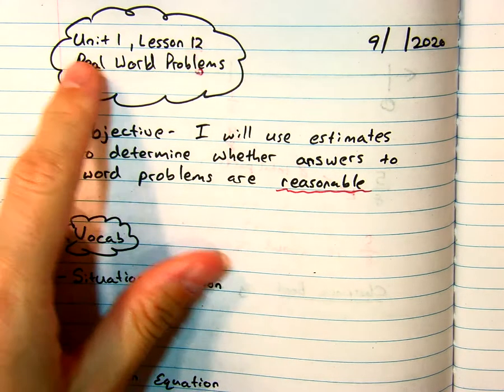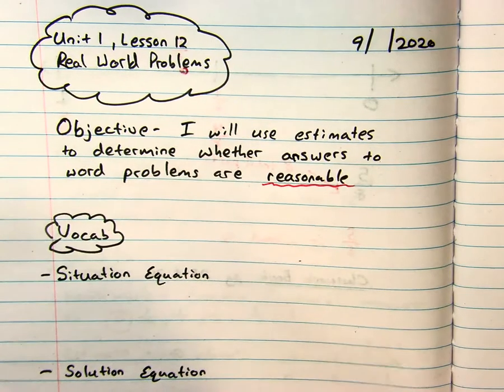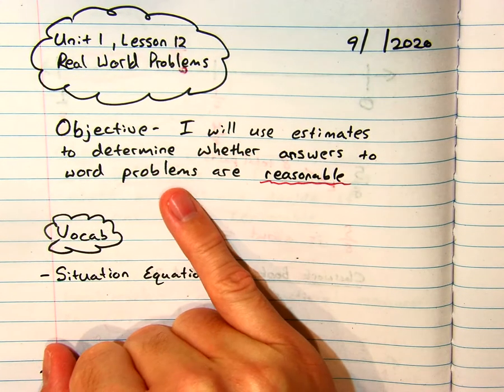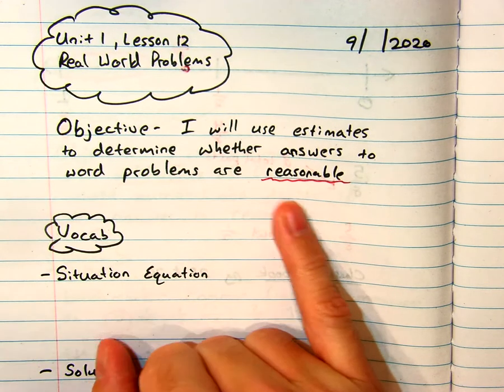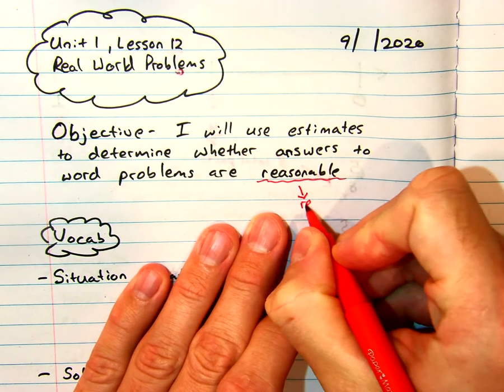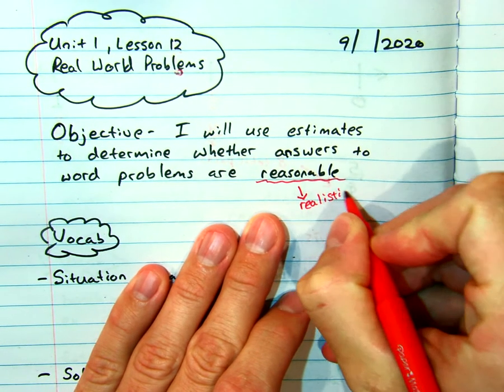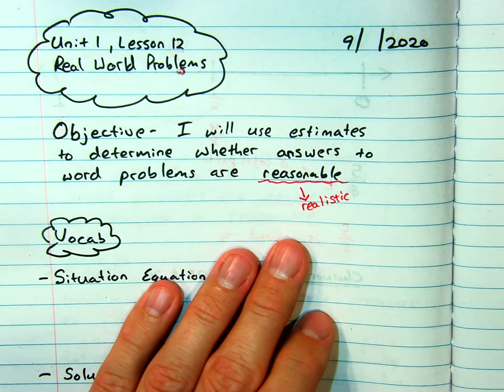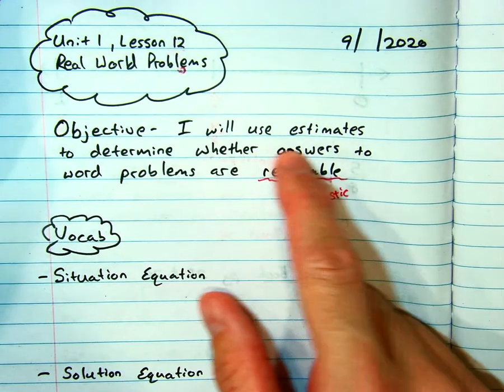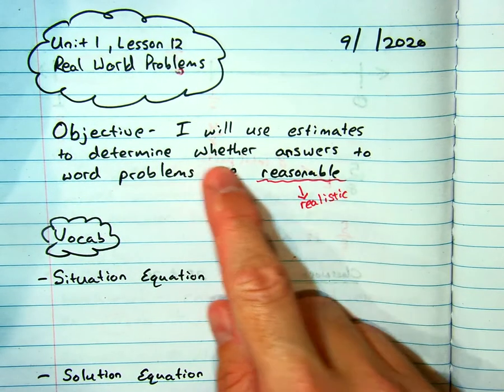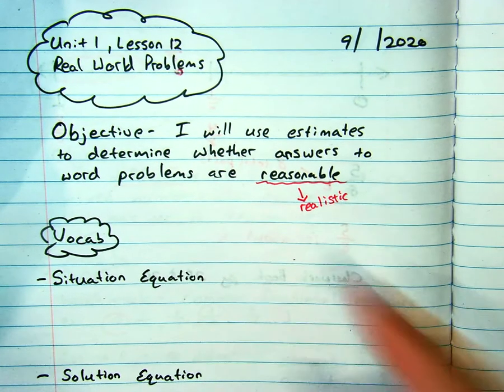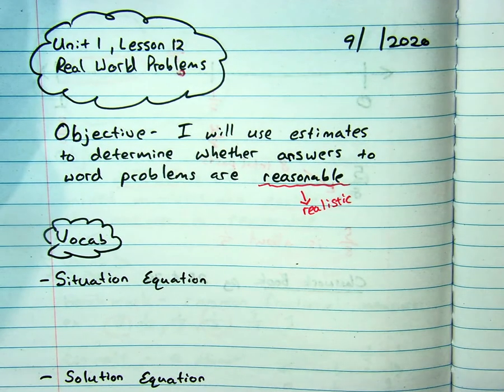All right. Our objective: Unit 1 lesson 12 real world problems. I will use estimates to determine whether answers to word problems are reasonable. And that keyword in there is reasonable. We talked about this recently. That means realistic. Can we estimate to see if we can get around the right answer so we know how much we're looking for? Read the objective with me one more time. I will use estimates to determine whether answers to word problems are reasonable. And we can't forget our punctuation.